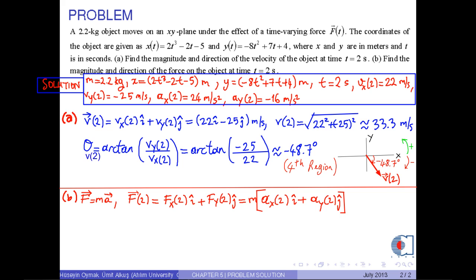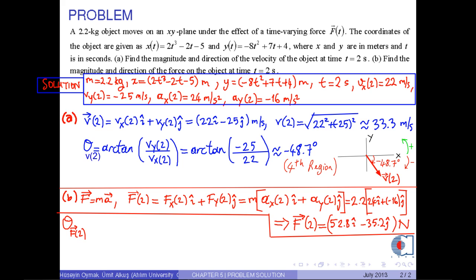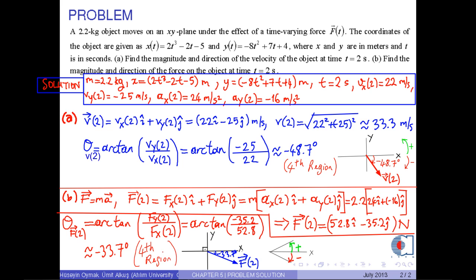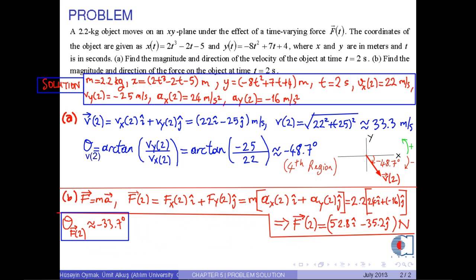Now, we put the numerical values into the corresponding places. As a result, we get 52.8 i hat - 35.2 j hat Newtons. Then the magnitude of the force on the object at time t = 2 seconds is found by this formula. Then we obtain approximately 63.5 Newtons.